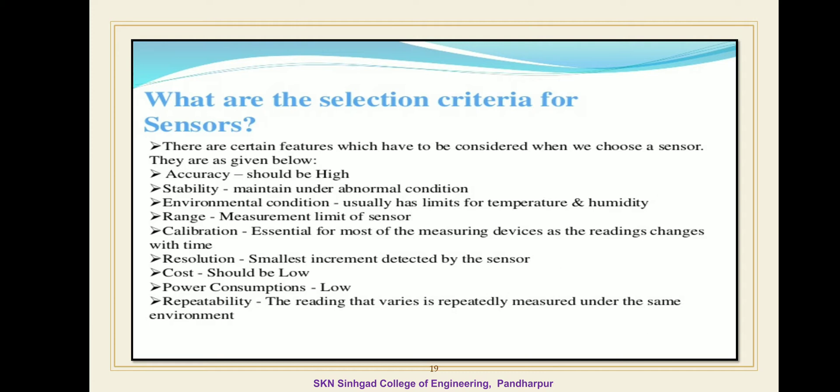Environmental condition usually has limits for temperature and humidity. Then range: range is the maximum and minimum change in input signal to which the sensor can respond. The ideal sensor should have a wide operating range.